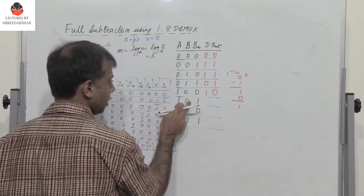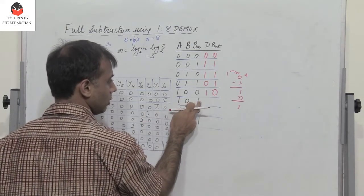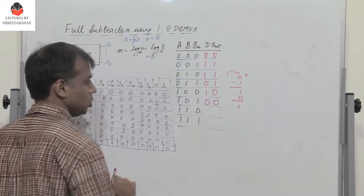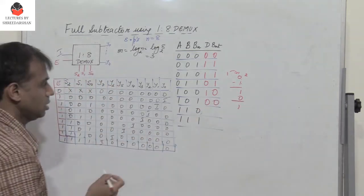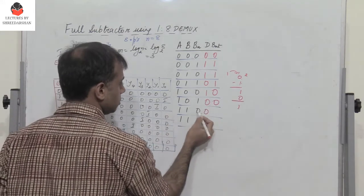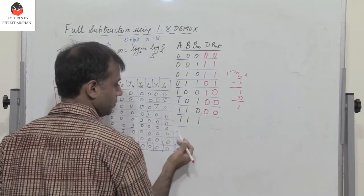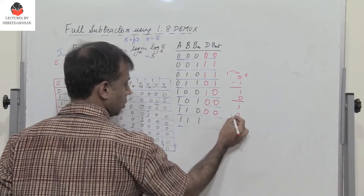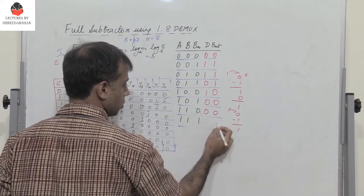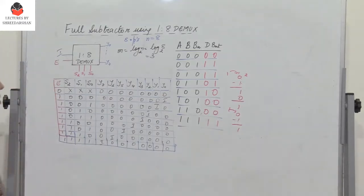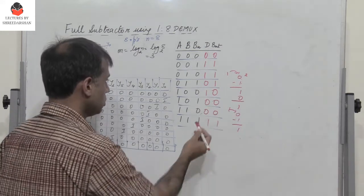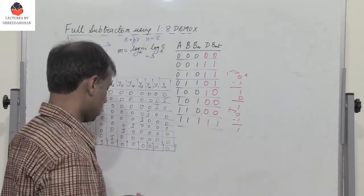Next, 1 minus 0 minus 1 gives difference 0 and borrow 0. Then 1 minus 1 gives 0, and 0 minus 0 gives 0. Finally, 1 minus 1 is 0, and 0 minus 1 gives 1 with a borrow, so you get 1,1. So the complete difference and borrow out column gives: 0,0 then 1,1 then 1,1 then 0,1 then 1,0 then 0,0 then 0,0 and then 1,1.